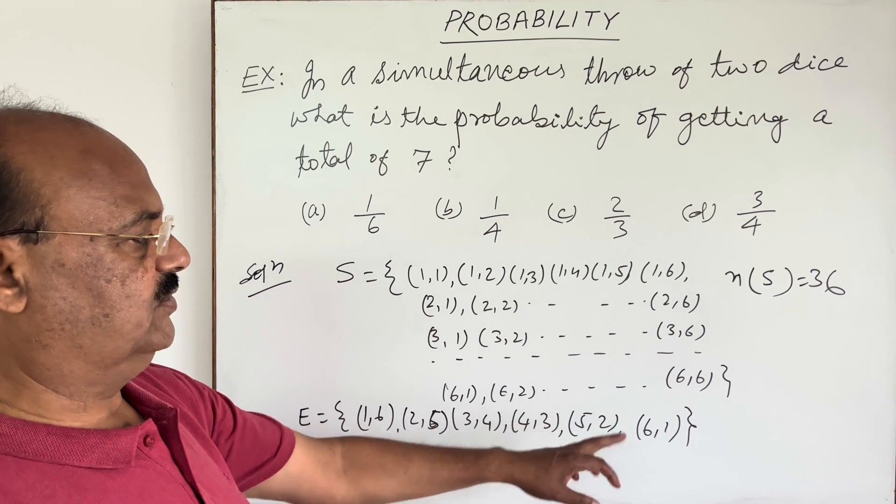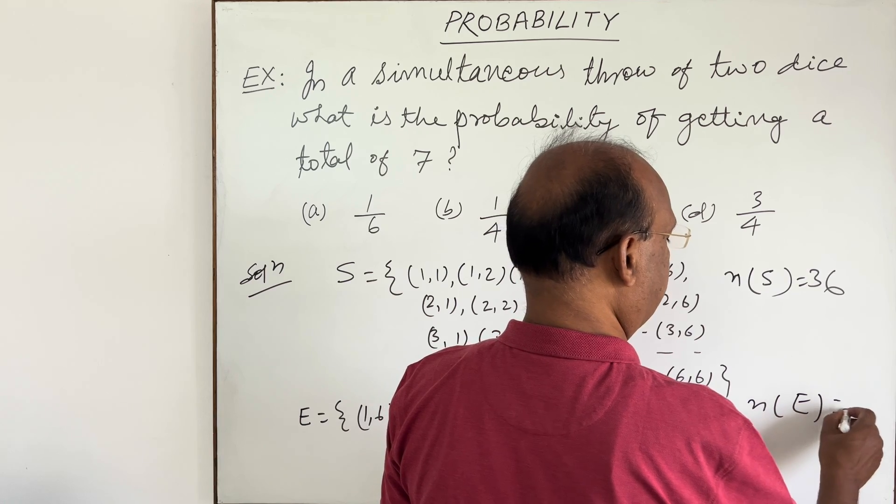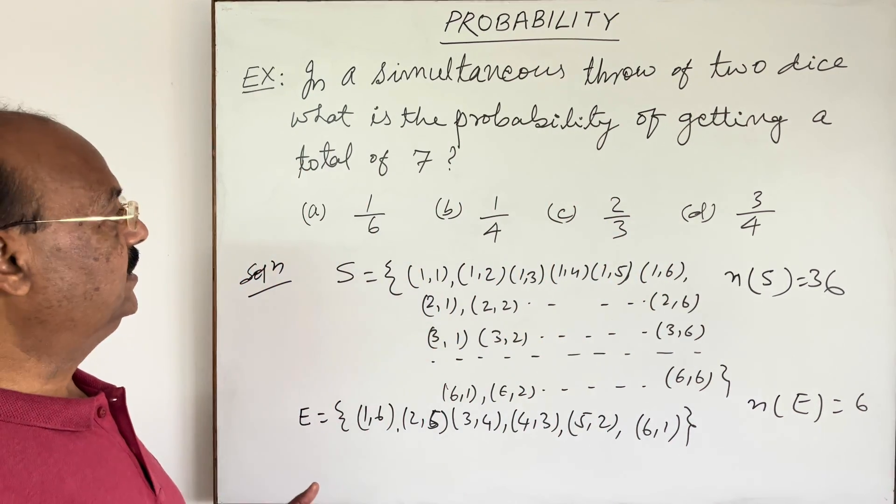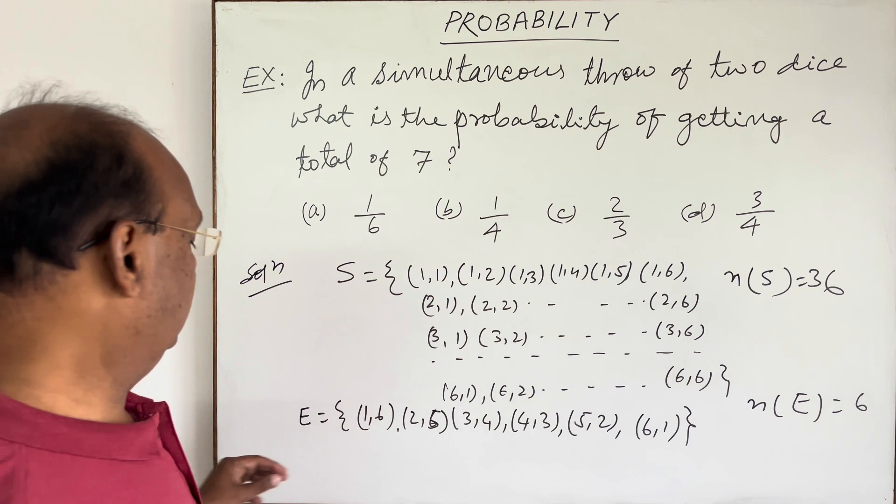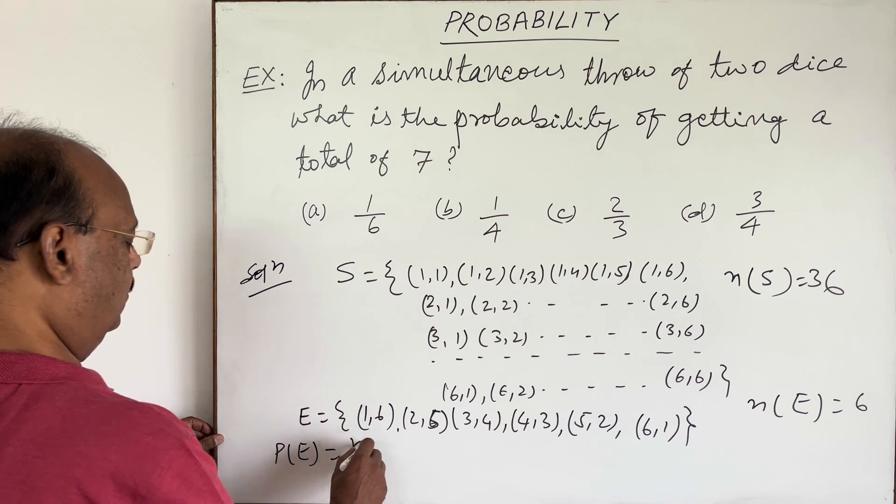So n(E) is equal to 6. And we know that to find the probability, we use the formula: probability of event E equals n(E) divided by n(S).